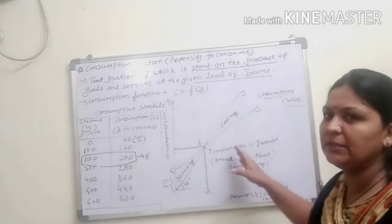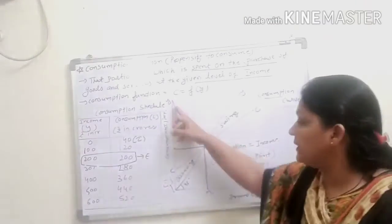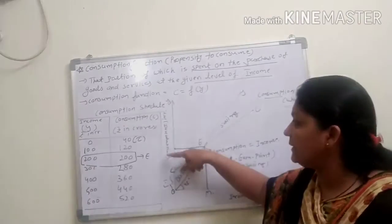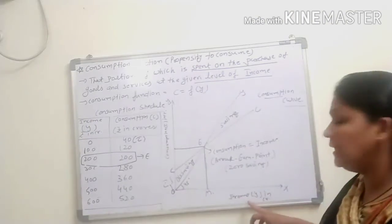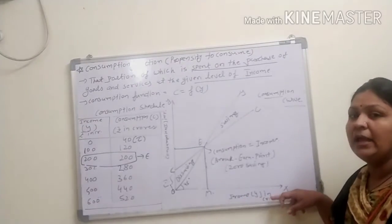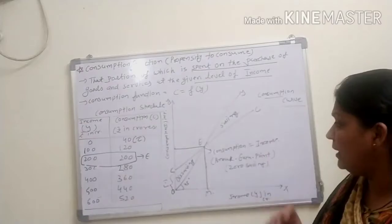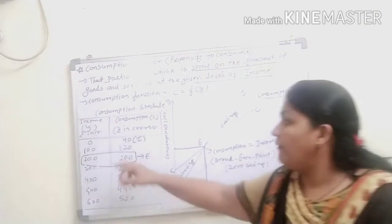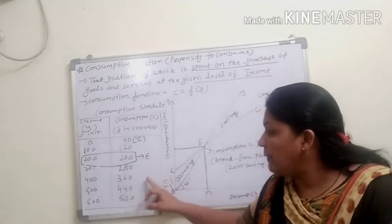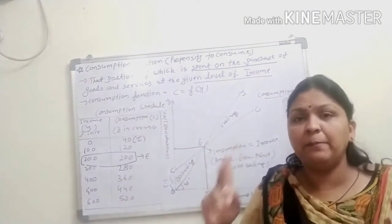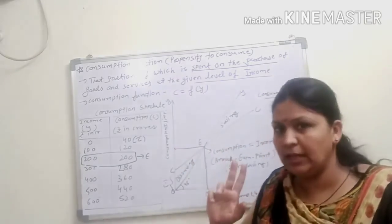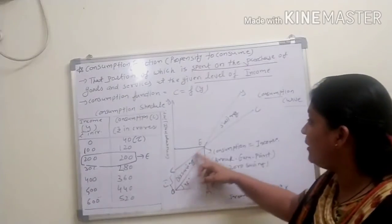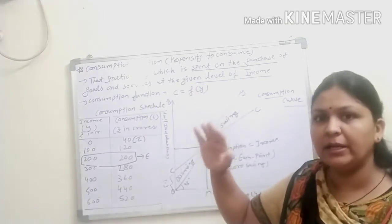Now this schedule is presented graphically. On the Y-axis we have consumption C in rupees crores, and on the X-axis we have income Y in rupees crores. The consumption curve is upward sloping to the right, showing a positive relationship between income and consumption — whenever income increases, consumption also increases. The C curve starts from 40 on the Y-axis because when income is 0, consumption is still 40.